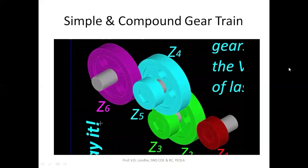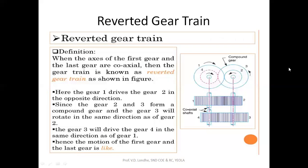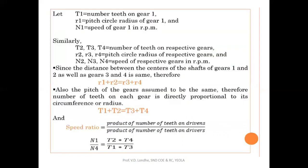Next is the reverted gear train. Here there are two shafts — input and output — which are coaxial, meaning they are in line. Gear one and gear two form a simple gear pair, and gear two and gear three form a compound gear. Input is given to gear one and output is taken from gear four. The key difference from compound gear train is that both input and output shafts are collinear. Since the pitch circle diameter and module are the same for the gear pairs, the relation is: the sum of pitch circle radii of gears one and two equals the sum of pitch circle radii of gears three and four.